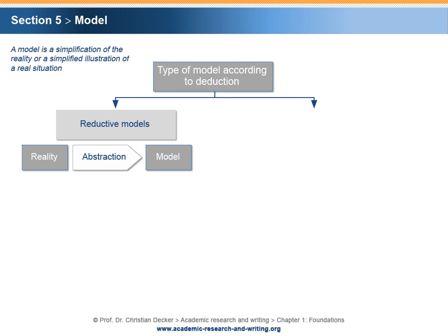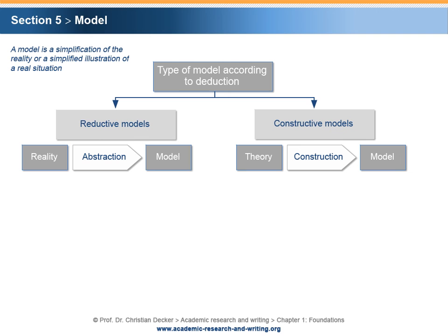Reductive models reduce reality by isolating and selecting single observed phenomena and connections. In other words, one reaches from reality to the model via abstraction. Constructive models, based on a theory and selected general phenomena and connections of reality, construct a simplified model of a fictitious reality. In other words, one reaches from a theory to a model via construction.